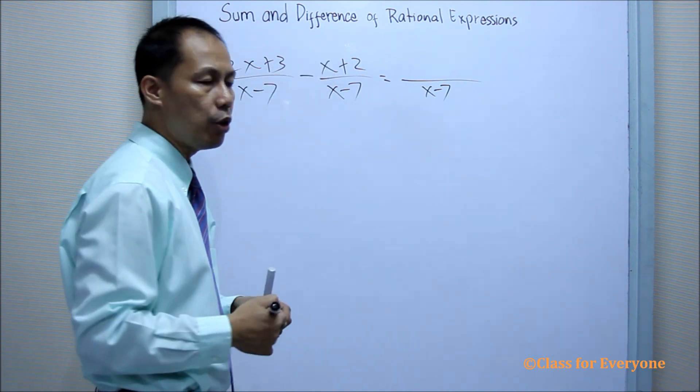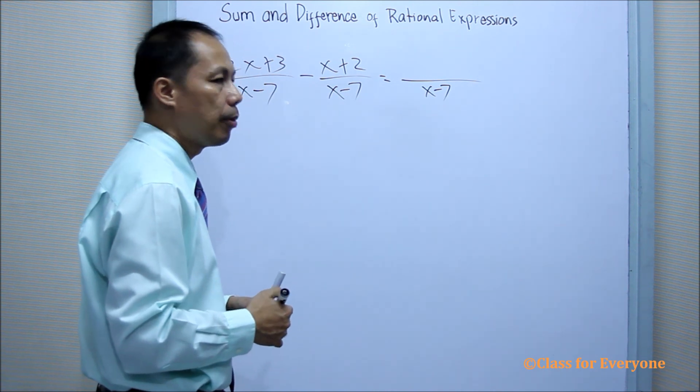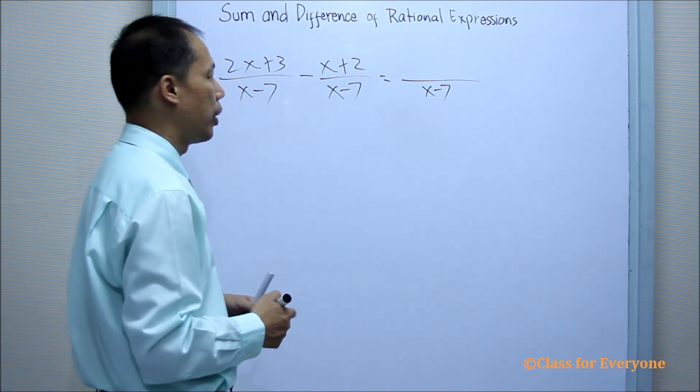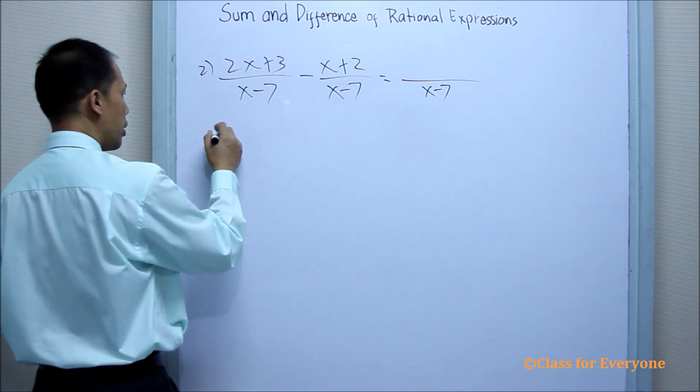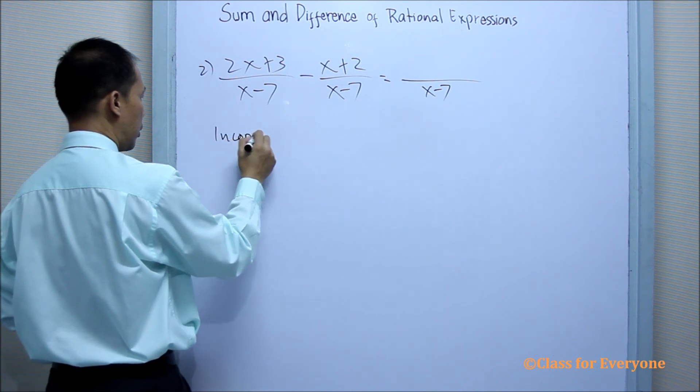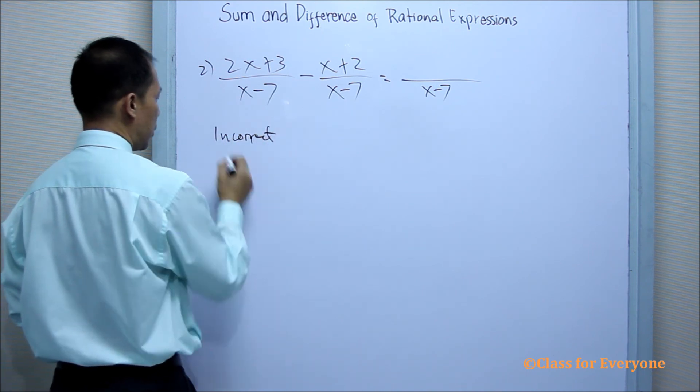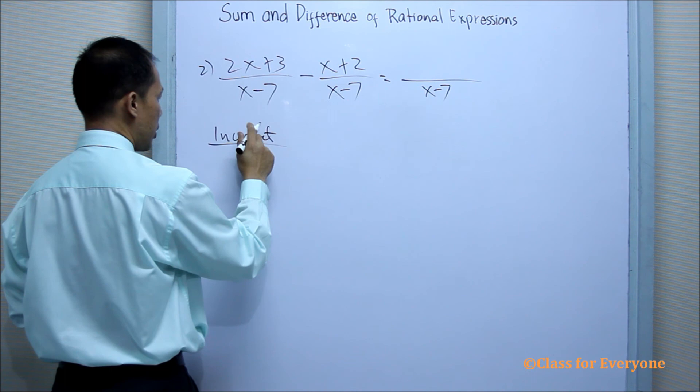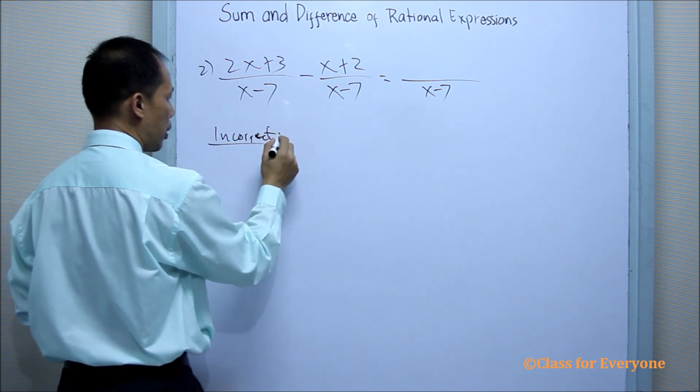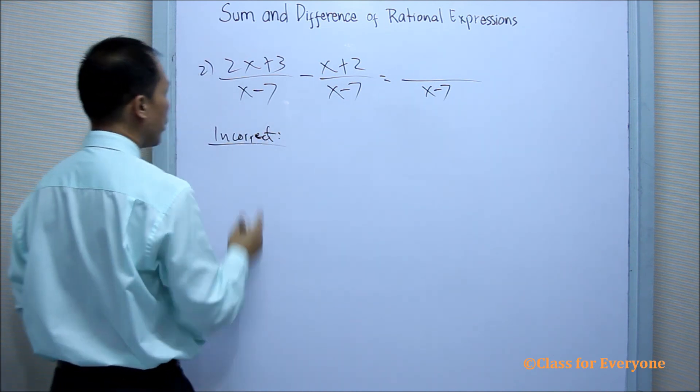But in subtracting a numerator, there is a common mistake by a student. So this is the incorrect. I just want to emphasize this incorrect because this is always being done by the student.